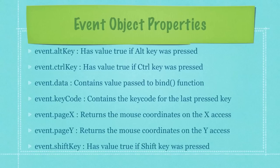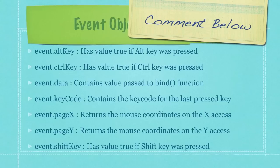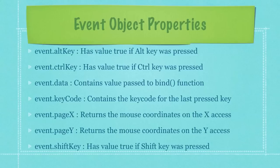And here are all the event object properties. These are properties that are set every single time an event occurs on a web page. You have event.altKey, which has a value of true if the alt key was pressed. event.ctrlKey has a value of true if the control key was pressed. event.data contains any value passed whenever you fire the bind function, which is used to assign event handlers to elements in a web page.